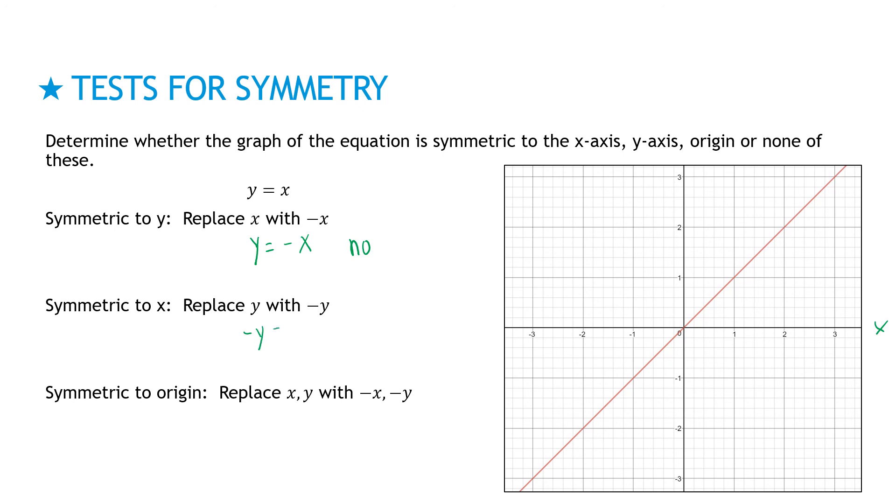Last one, symmetric to origin. That means I could take this and rotate it 180 degrees, and this one's looking promising, because it does look like, in fact, that if I rotated this 180 degrees, it would be the exact same function. So let's replace y with negative y and x with negative x, and then simplify by dividing by negative 1 on each side, and get y equals x, which is where I started. So yes, it's symmetric to the origin.